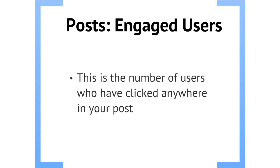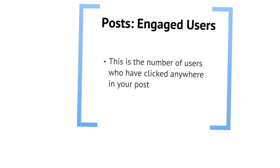Engaged users is another thing you can find out with posts. This is whenever somebody clicks anywhere on your post. Spending a lot of time reading your post isn't in and of itself an engaged user — if they're just seeing it in their news feed and being passive about it, that doesn't count. Somebody has to actually click the post. So it's in your best interest to include clickable things in your posts, like links to websites or links to other Facebook posts.